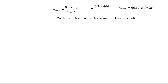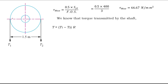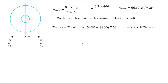Now we calculate the torque transmitted by the shaft using the pulley. T1 and T2 are the tensions in tight side and slack side. The equation for torque transmitted by a pulley is T equals T1 minus T2 into R, where R is the radius of the pulley. Putting in the values: 5400 minus 1800 times 750 mm radius. The torque T is equal to 2.7 into 10 to the power 6 N·mm.